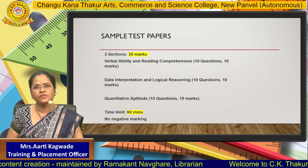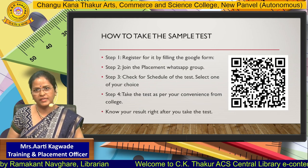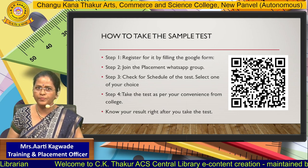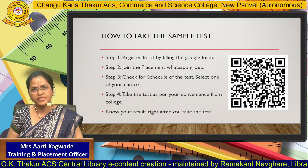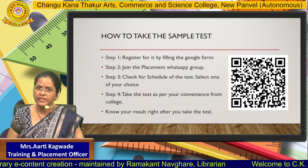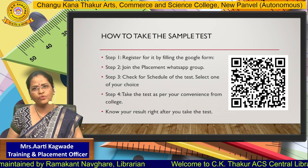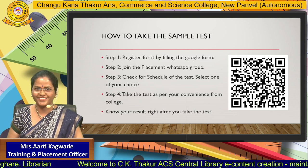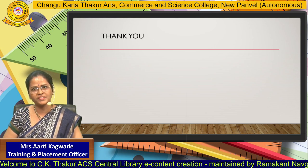You can also take the sample tests from the placement cell, as I have explained the paper pattern. Now, let us understand how you can take this test. Simply scan the QR code and register yourself by filling the Google form. Then join a WhatsApp group where you will be shared a schedule of the test, starting from October. Select a date as per your convenience and come to college to take the test on that date. After the test is over, you will immediately get your results and the correct answers as well. I hope you will benefit from these efforts of the training and placement cell. Thank you very much.